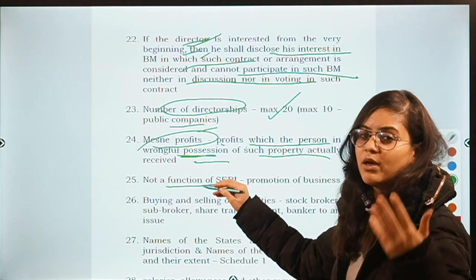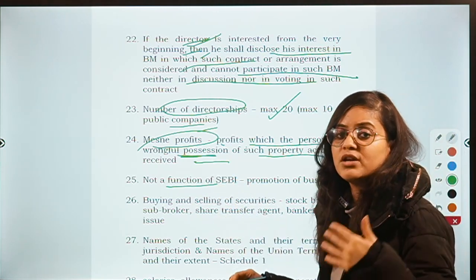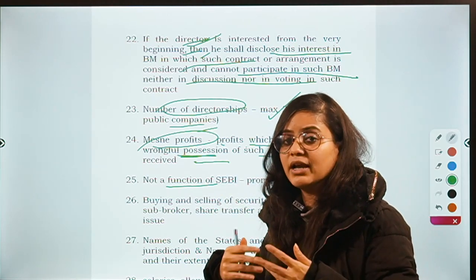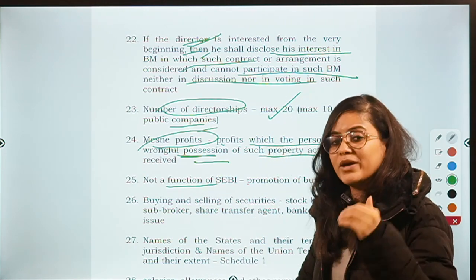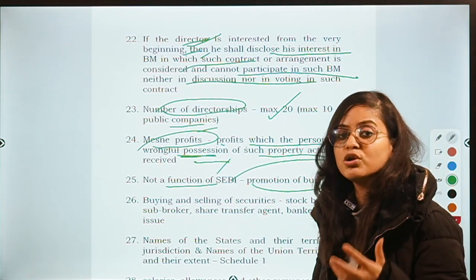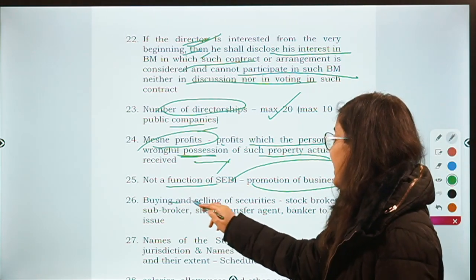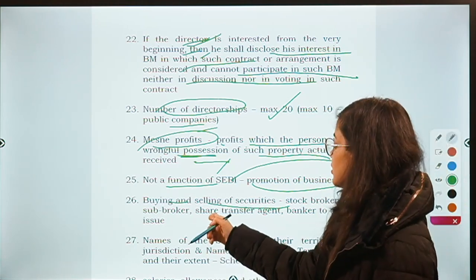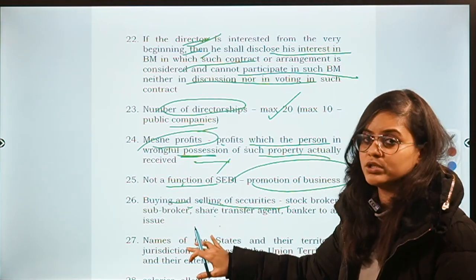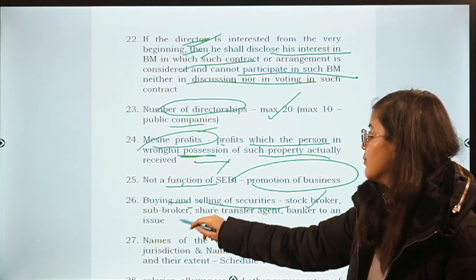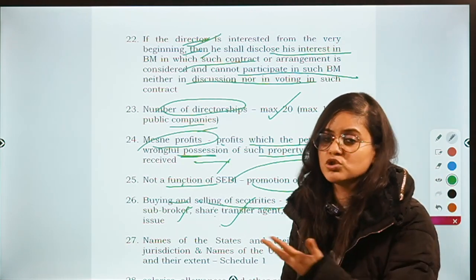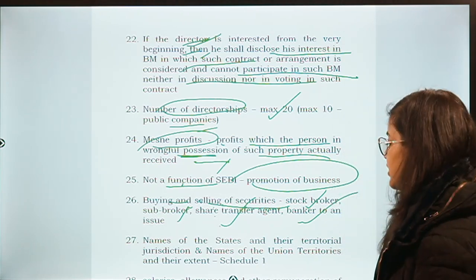Next: which of the following is not a function of SEBI? Most questions were in the negative form. Among the options given, promotion of business is not a function of SEBI. Then there was another negative question: who of the following cannot buy or sell securities? As per the SEBI Act, only a stockbroker, sub-broker, share transfer agent, or banker to an issue can buy or sell securities.